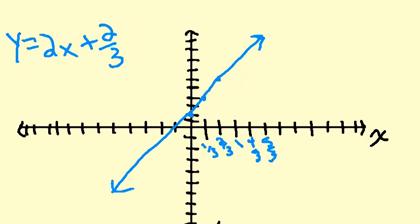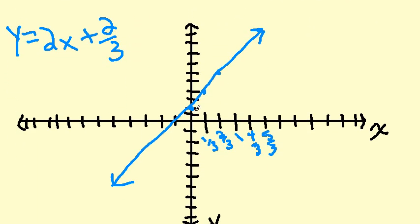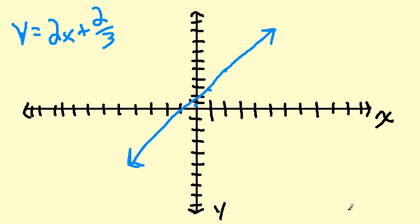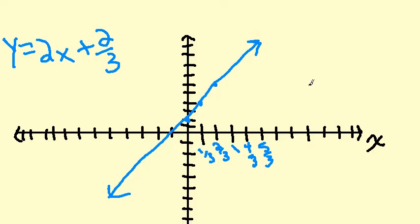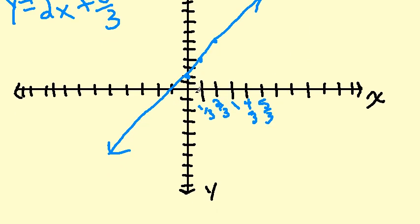And this is the graph when we have each dash representing one third. You see they look almost identical because the only difference is the scaling. And when you're doing a coordinate plane you can have the scale represent any number as long as it's evenly distributed along the coordinate plane.